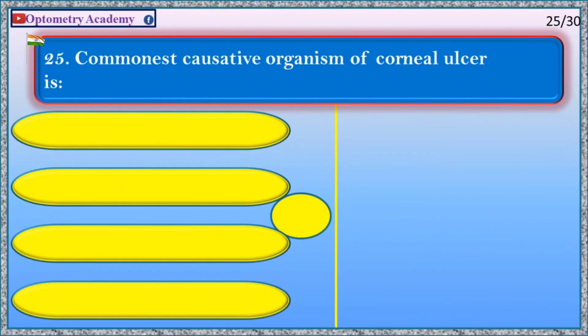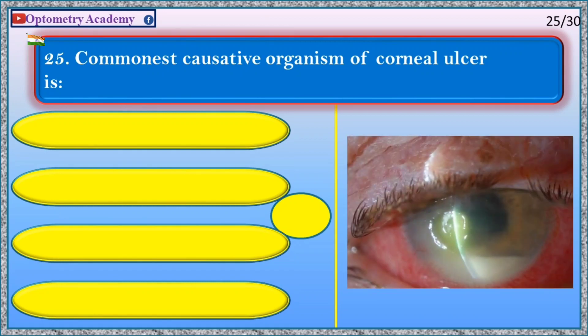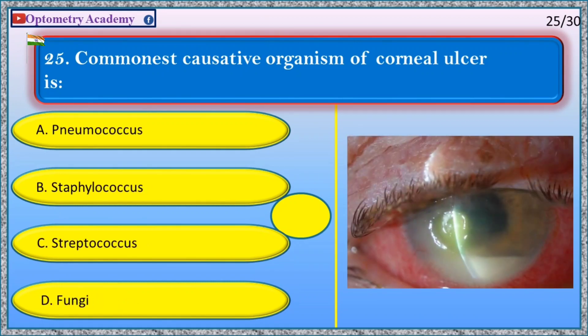Commonest causative organism of corneal ulcer is: A. Pneumococcus, B. Staphylococcus, C. Streptococcus, D. Fungi.